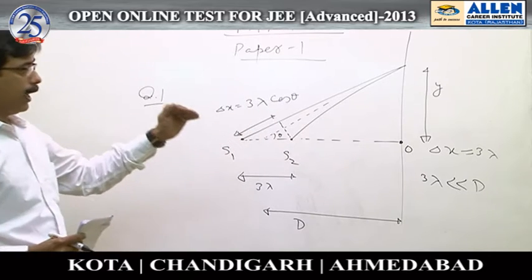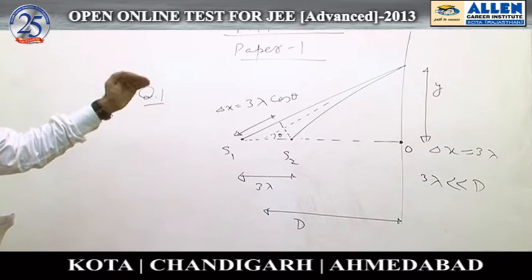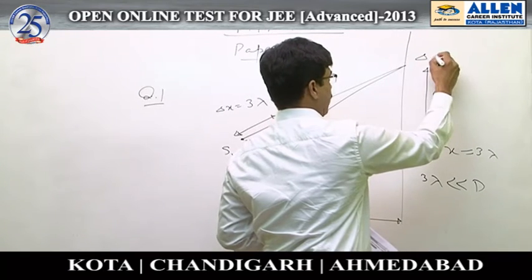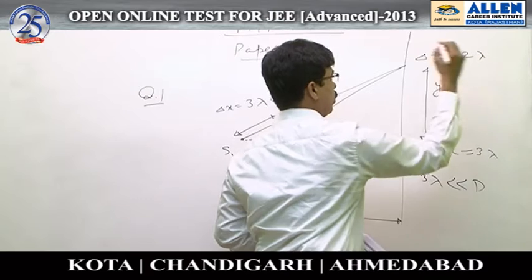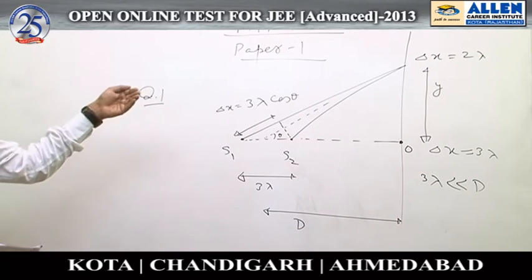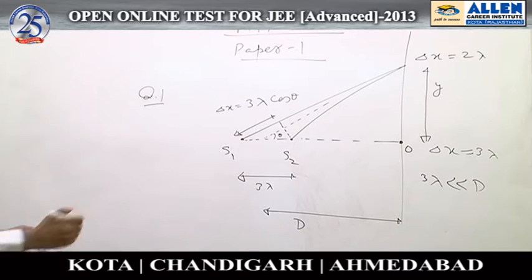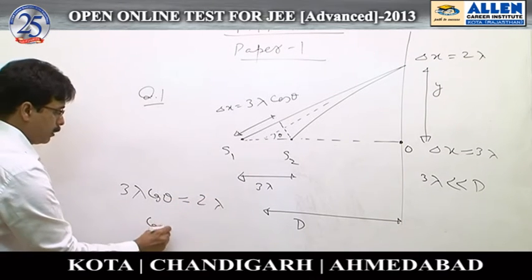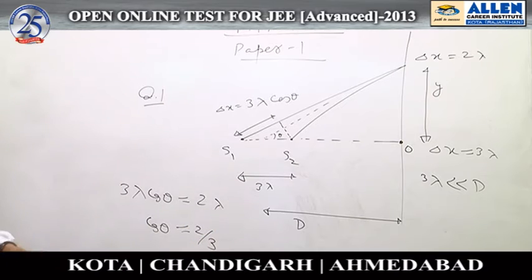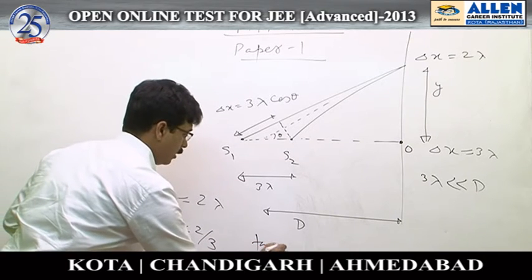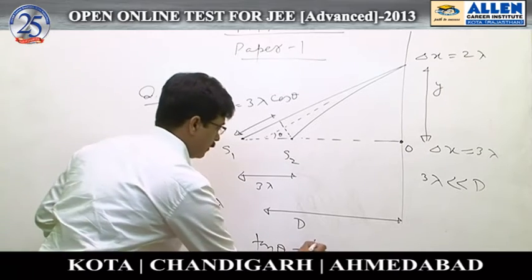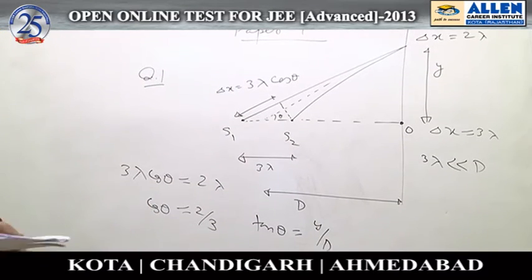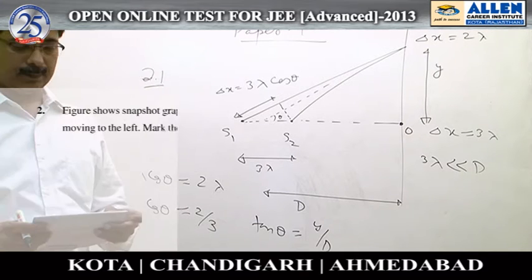As we move up from O, the path difference goes on decreasing. So the nearest maxima is the second order maxima, where path difference will be 2λ. From the diagram, 3λcosθ = 2λ, which means cosθ = 2/3. From this we can calculate tanθ = y/d, and from here you get the answer — option A.